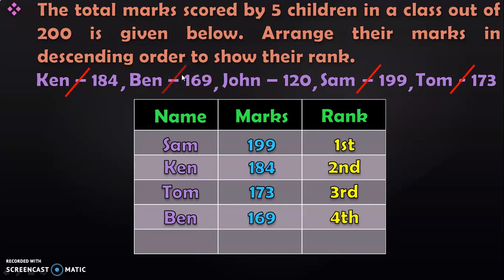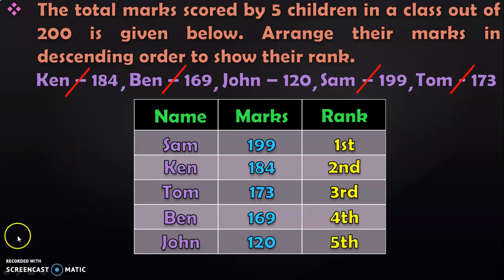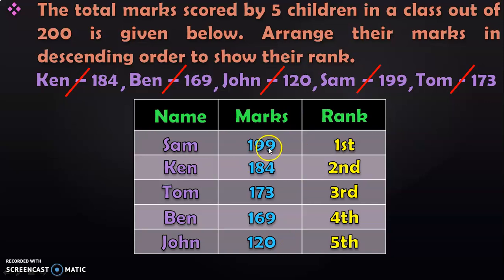Strike off Tom from the comparison. In the remaining 2 students, Ben and John, Ben with 169 stands in the 4th position. Strike off Ben, and the last number is 120 scored by John, so John stands in the 5th position. The numbers are now arranged in descending order, and the student who scored the highest mark gets the 1st rank, with remaining children in 2nd, 3rd, 4th, and 5th positions.